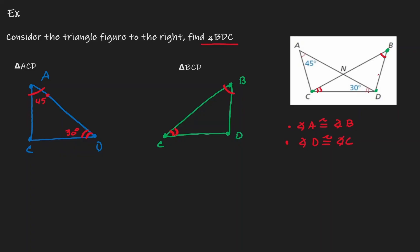These triangles have three angles. And if that's the case, then we can apply the third angle theorem. We do have enough information to identify the value of angle C, because we know that the summation of the interior angles is 180, so we can do 180 minus 45 minus 30, which is equivalent to 105 degrees.